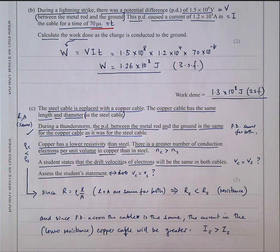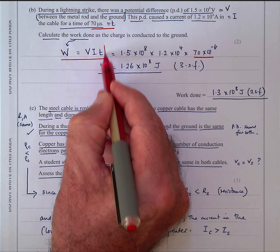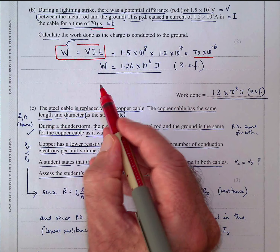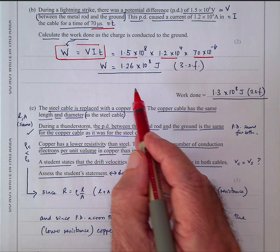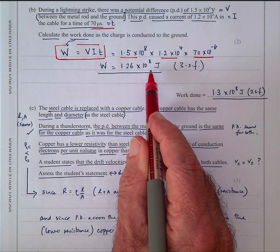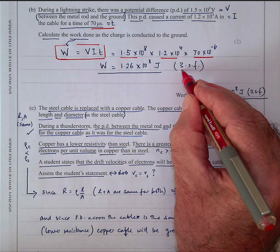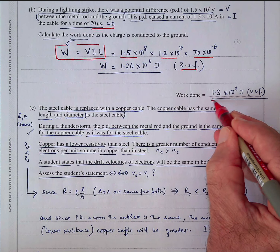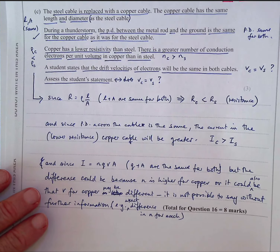— remember, that means 70×10⁻⁶ seconds. They want you to calculate the work done: W = VIt. So it would be 126 million joules, or 1.26×10⁸ joules to three significant figures. Since the data is given to two significant figures, you should simplify it to 1.3×10⁸ joules. I stress this because you don't want to lose marks for putting inappropriate numbers of significant figures.